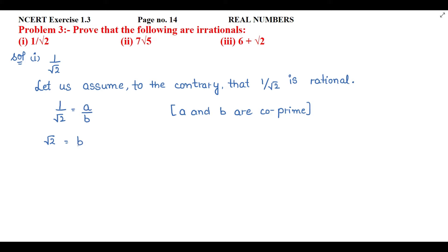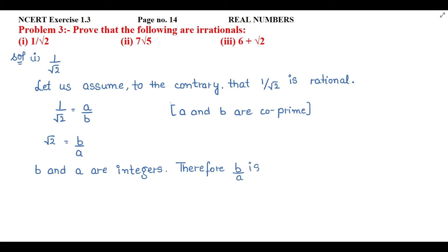So it will be b by a, where b and a are integers. If they are integers, surely the division will also give us a rational number. So we can write: b and a are integers, therefore b by a is a rational number.